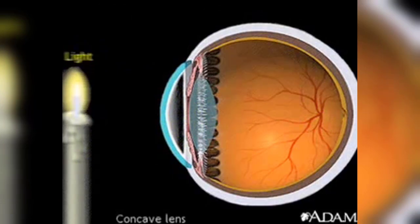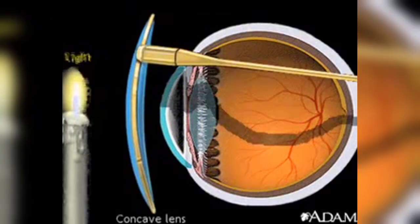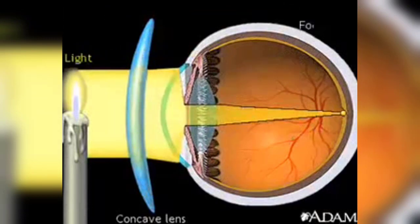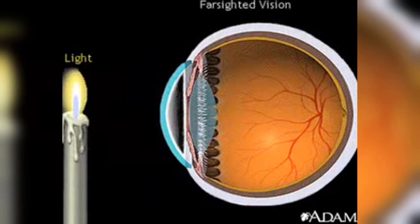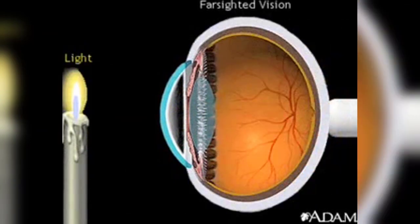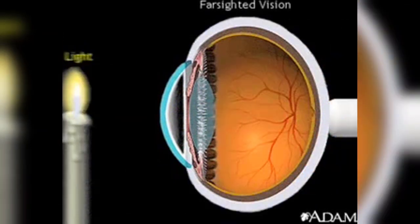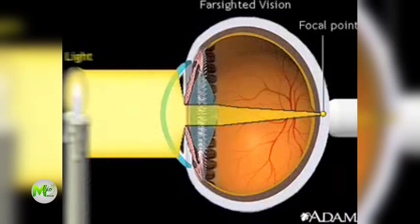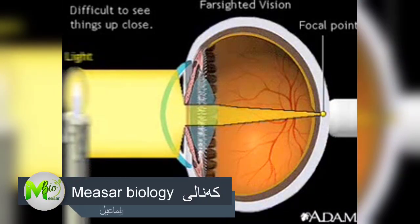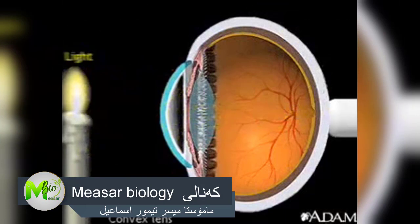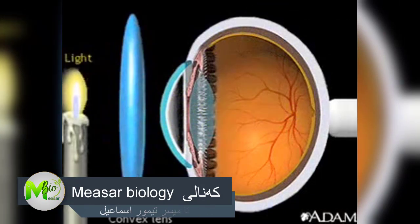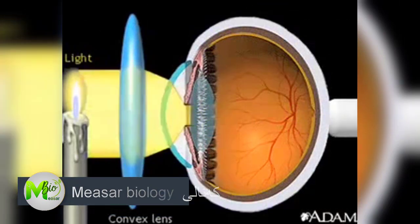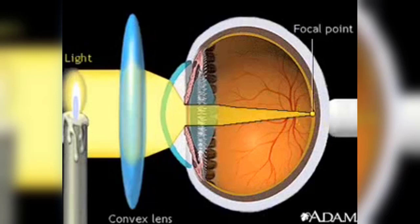Glasses with concave lenses are used to correct nearsightedness. The concave lens focuses light back onto the focal point of the retina. Farsightedness occurs when the length of the eye is too short. Light is focused at a point behind the retina, making it difficult to see things that are up close. A convex lens is used to correct farsightedness because it directs the focal point back onto the retina.